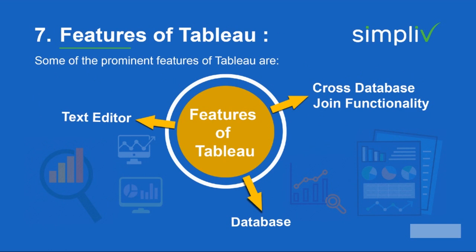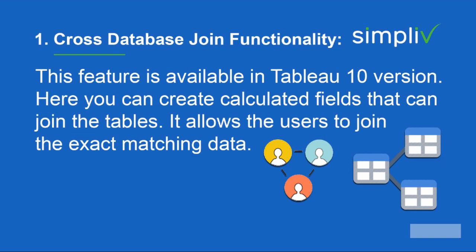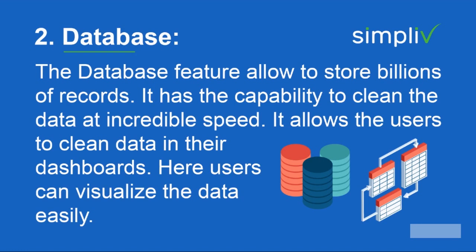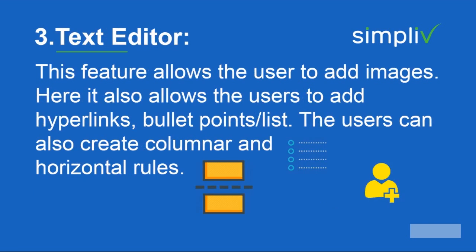Here we will look into the features of Tableau. Some of the prominent features are cross data joined functionality, database, and text editor. Cross data joined functionality is available in Tableau version 10 — you can create calculated fields that join tables and allow users to join exact matching data. The database feature allows storing billions of records and has the capability to clean data at incredible speed, allowing users to visualize data easily. The text editor feature allows users to add images, hyperlinks, bullet points or lists, and create columnar and horizontal rows.